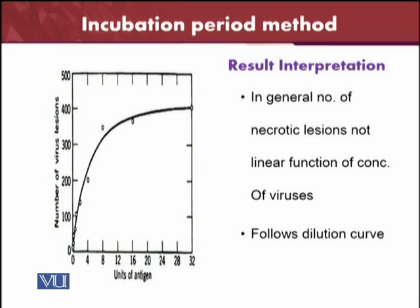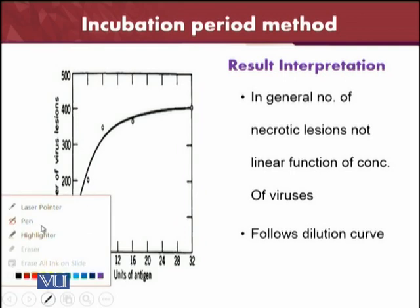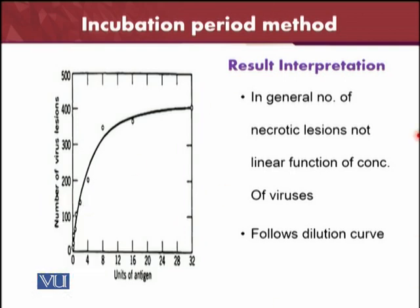The number of lesions is dependent on the concentration of viruses and how much concentration of virus is present in that specific inoculum. Similarly, it will follow the dilution curves — how much dilution you have to use for that specific inoculum. For example, in this example, you can see that we are using two units of the antigen, and the number of virus lesions we have already seen in this curve from the last slides.